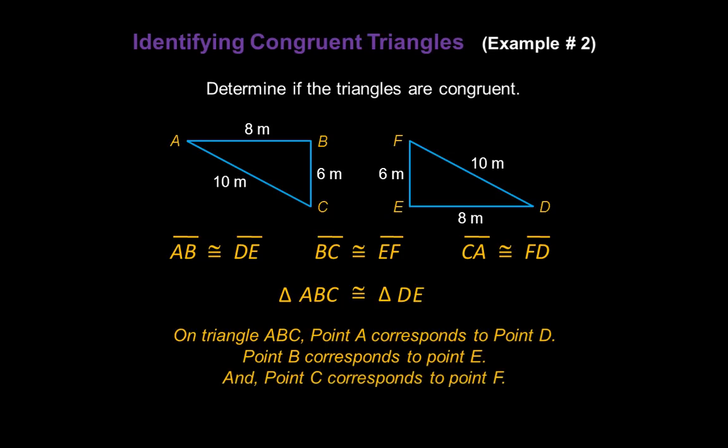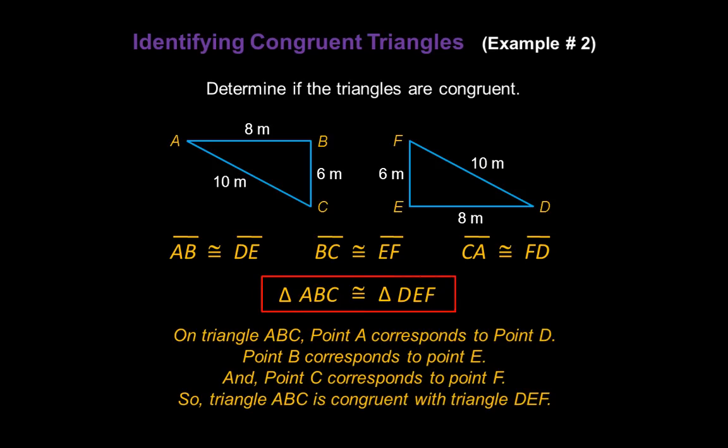Finally, point C corresponds to point F on the other triangle, and we'll write the F down last. Now we know triangle ABC is congruent with triangle DEF.